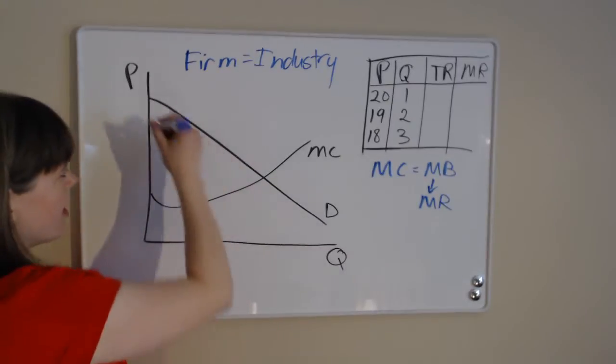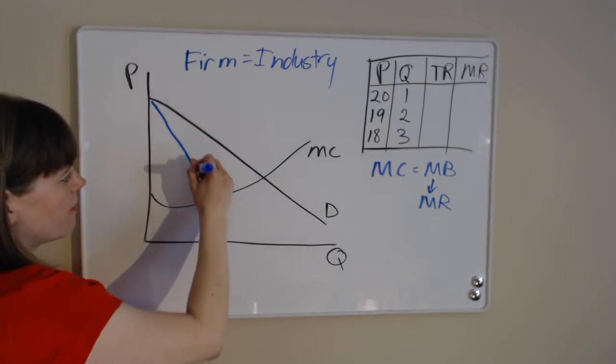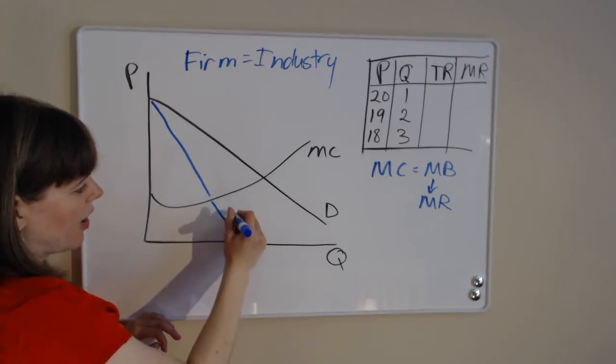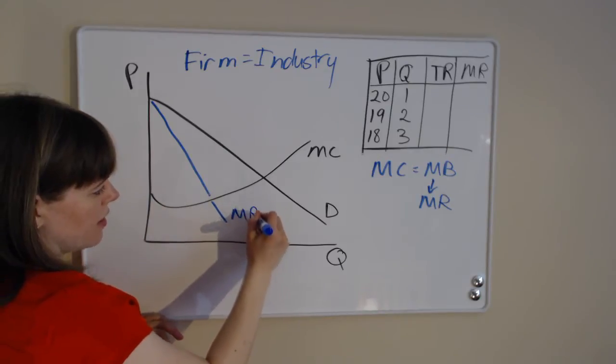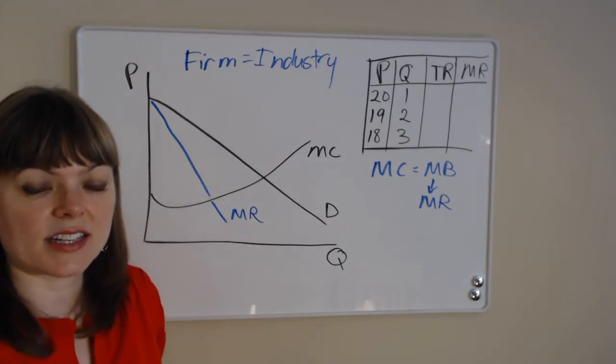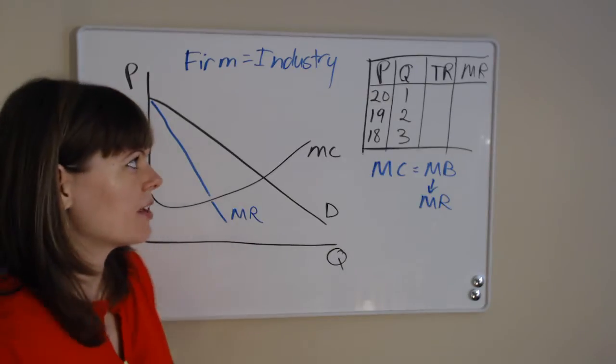And first I'll show you the curve and then I'll explain why it has this shape. So with a linear demand curve, the marginal revenue curve is going to shoot off kind of like this, about halfway in between the demand curve and the axis. That's going to be our marginal revenue curve.